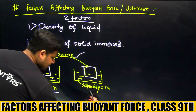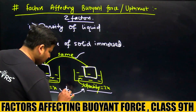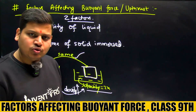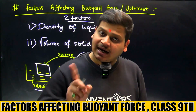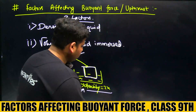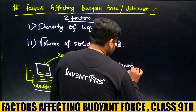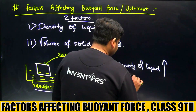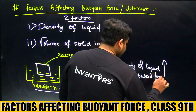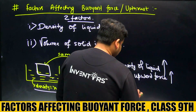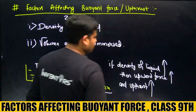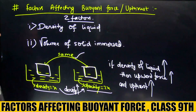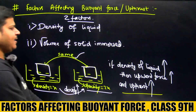पहले liquid का density x है, दूसरे का density 2x है। आप यहाँ देख रहे हैं कि density increase हुई है। तो अगर density बढ़ती है, तो upthrust अधिक लगने लग जाता है — upward force ज़्यादा हो जाएगा। If density of liquid increases, then upward force increases and upthrust increases.